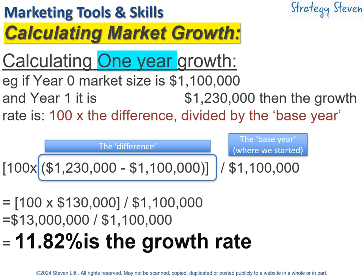In terms of calculating one-year growth, it's relatively simple. What you're going to take is 100 times the difference between the market at that future point and now, divided by the base year sales — the market size before we even started. So if you take a look at this calculation, after one year you're supposed to be at 1.23 million.